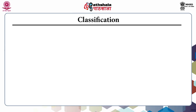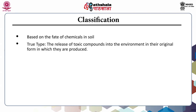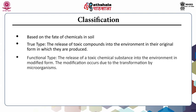Classification based on the fate of chemicals in the soil: First is the true type, which involves the release of toxic compounds into the environment in their original form in which they are produced. The second is the functional type, which involves the release of a toxic chemical substance into the environment in modified form. This modification occurs due to transformation by microorganisms.